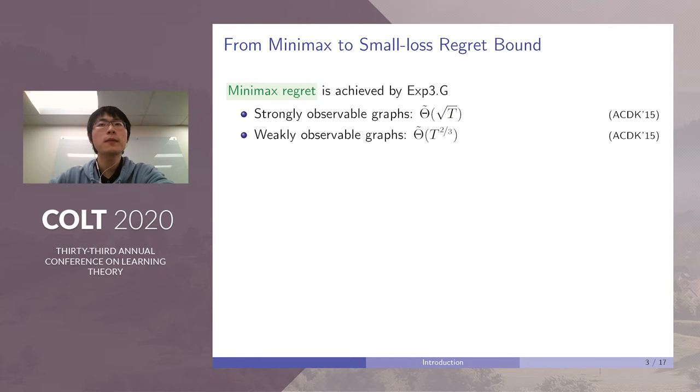The minimax regret bound for GMAB is well studied by Alon et al. They showed that for strongly observable graphs, the minimax regret is O(√T) and for weakly observable graphs, it is Θ(T^(2/3)). The definition of these two types of graphs will be introduced in later slides.